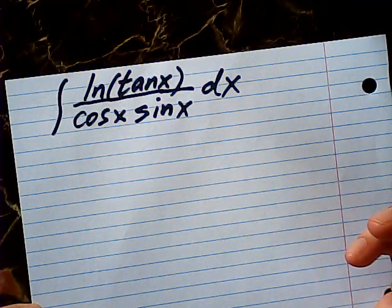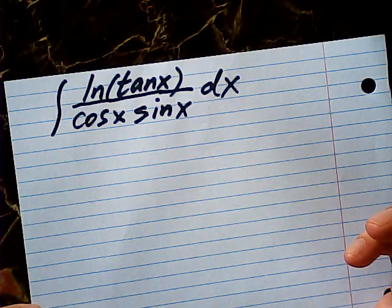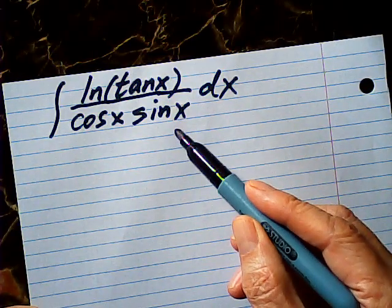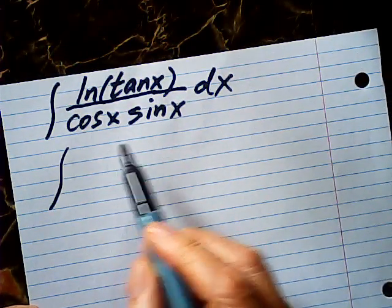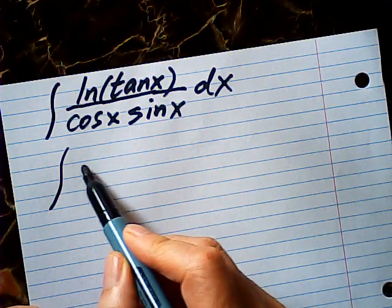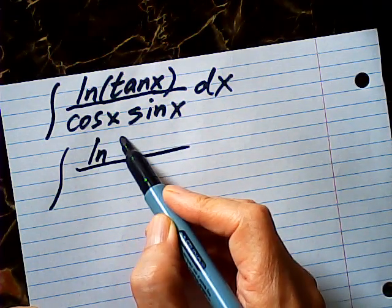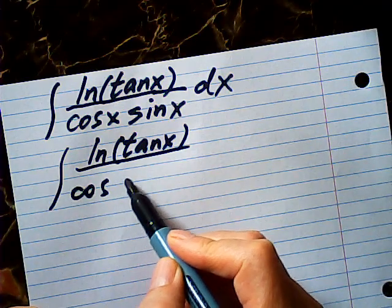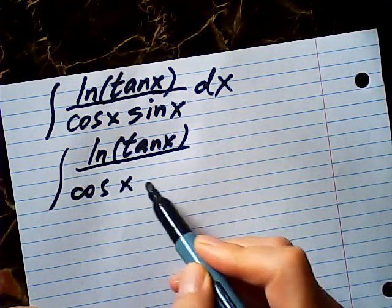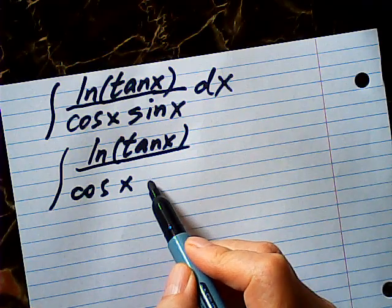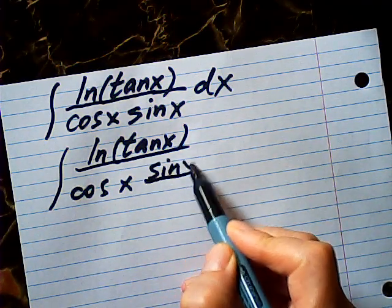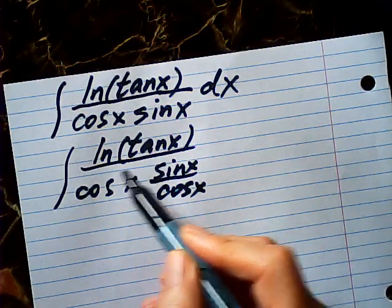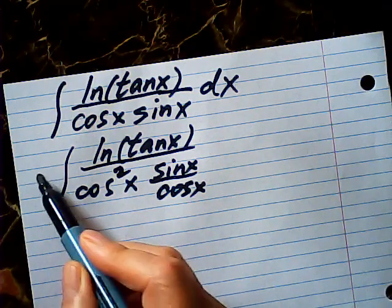Now how do we start? Let me do this way. This is log tangent x. This is a cosine x. Now if I change this one to sine over cosine, then I just multiply the cosine here, the cosine square, right? So they are equal.